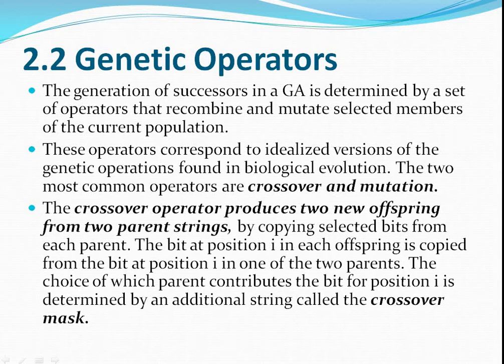By using these genetic operators, the new generation of the current population is generated. The crossover operator produces two new offspring from two parent strings. It copies selected bits from each parent — it selects a few bits from parent one and the remaining bits from parent two to create the new offspring.